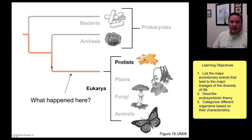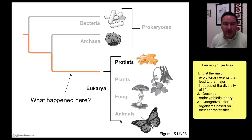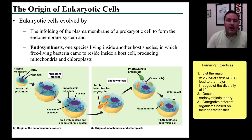The real interesting question is what happened along this branch of evolution that got you from a prokaryotic cell to a eukaryotic form of a cell, and how did that diversify into all of the different lineages of eukaryotes? This idea is well studied, and we have a very strong theory about how this occurred. Remember, theory in science is as good as it gets.